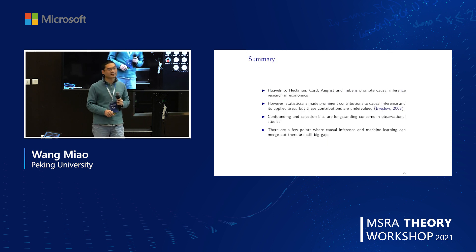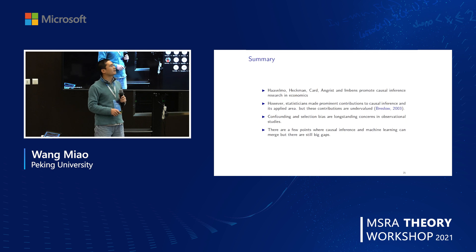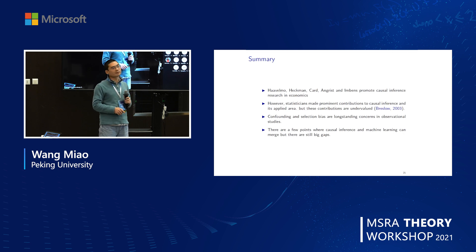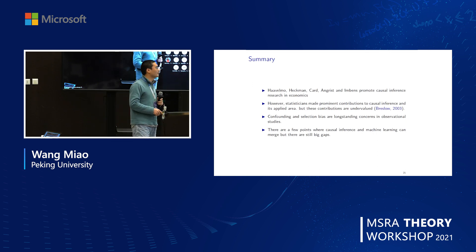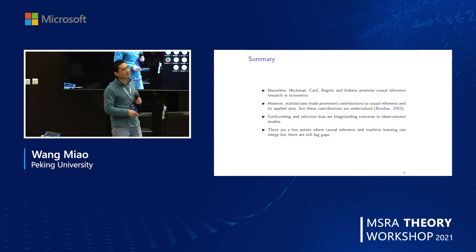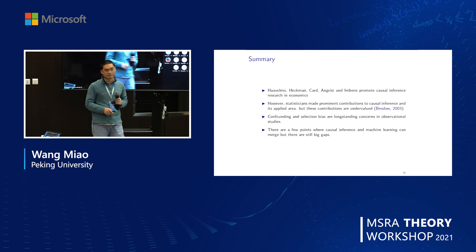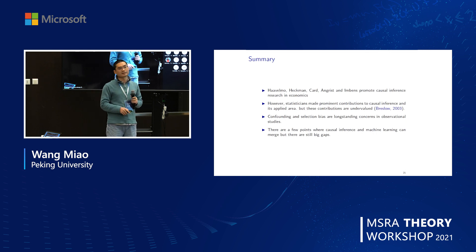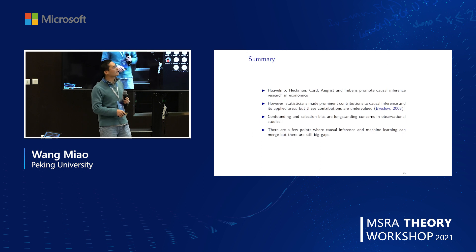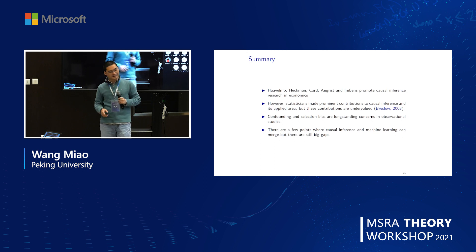So in summary: economists Haavelmo, Heckman, Card, Angrist, and Imbens promoted causal inference in economics. However, statisticians made prominent contributions to causal inference and its applied areas, but these contributions are undervalued. Confounding and selection bias are persistent concerns in observational studies, and we continue to develop new methods for confounding adjustment and non-response adjustment. There are a few points where causal inference and machine learning can merge, but there are still big gaps — perhaps one of the concerns of this research center for future research.